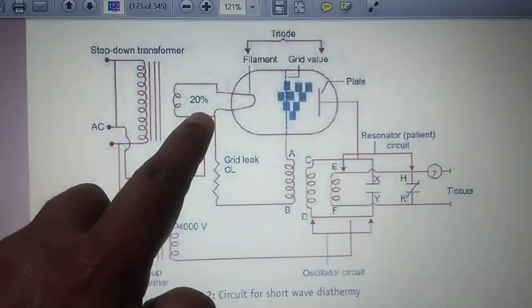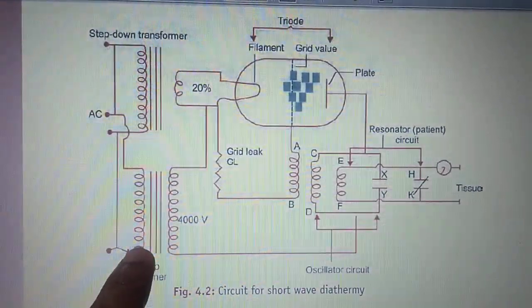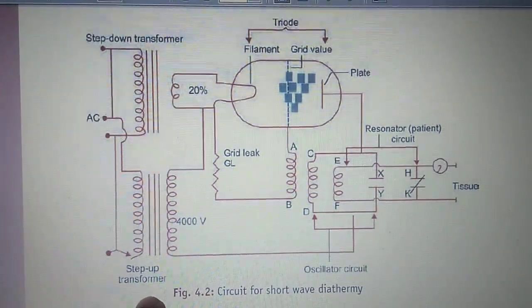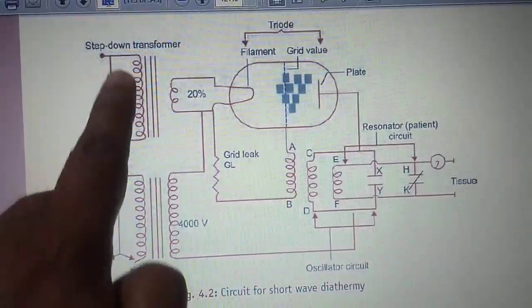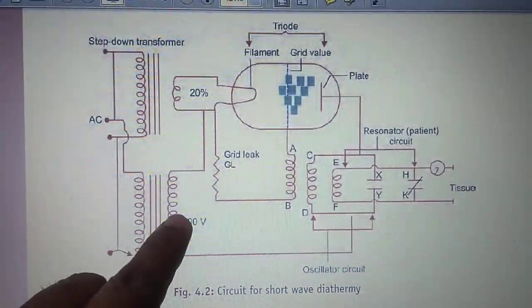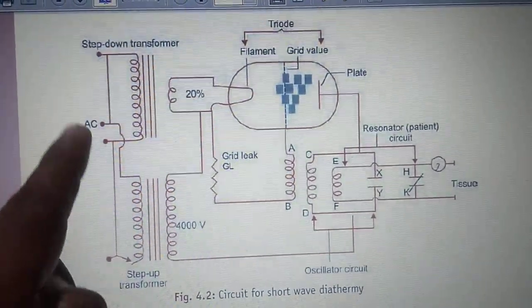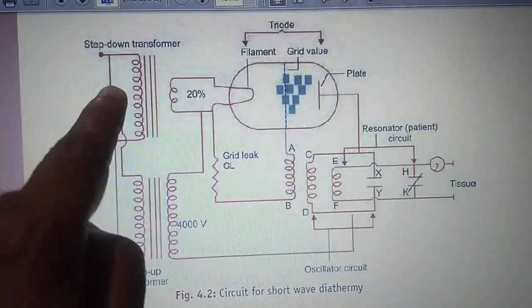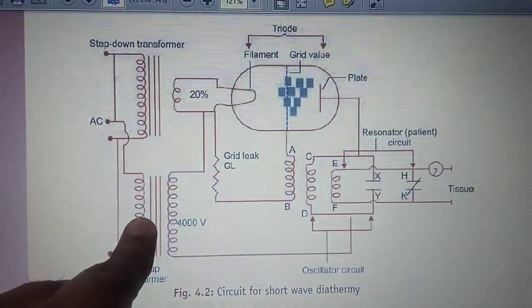There are two transformers: one is a step-down transformer, the other one is a step-up transformer, as written in this diagram. Step-down means the number of coils are less here, while here the number of coils will be more.